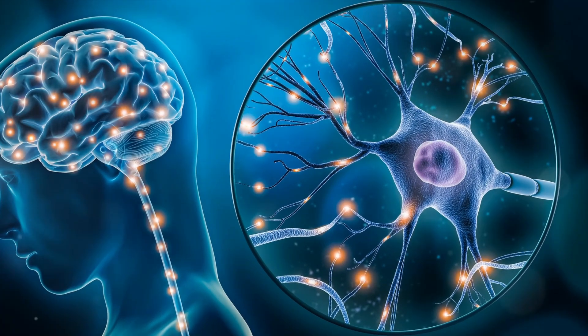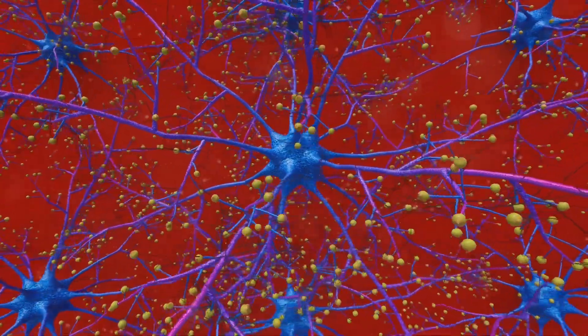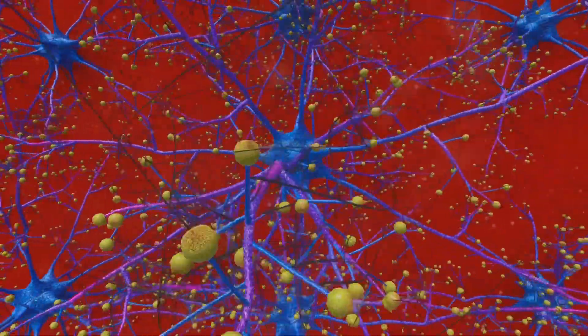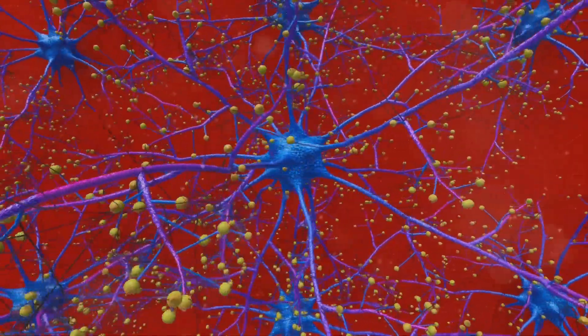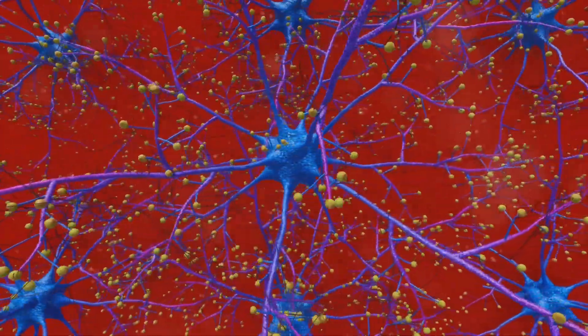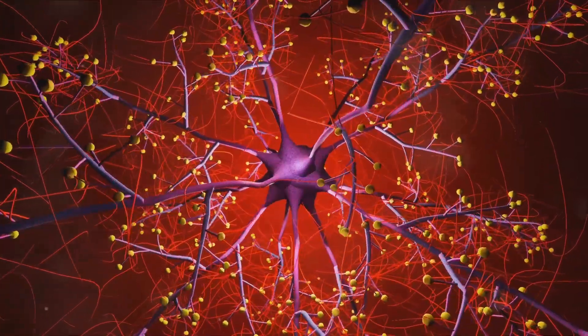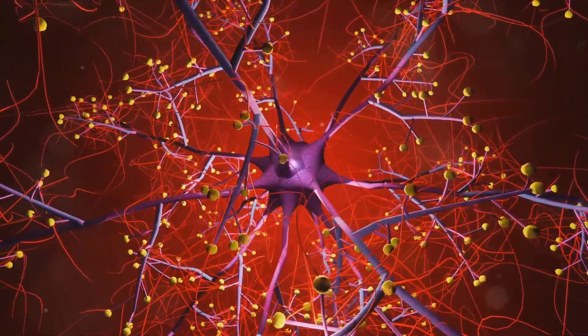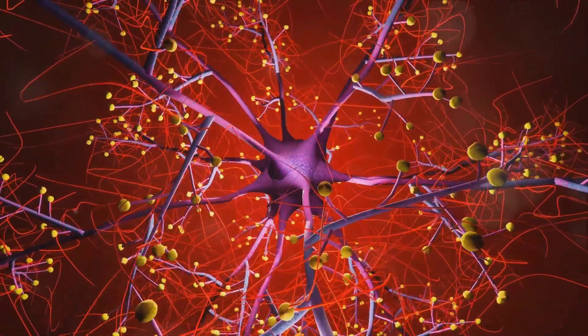But what does this mean for us? Well, this research is not just about making pretty maps. It's about unlocking the secrets of the brain and, by extension, ourselves. It's about understanding how each cell contributes to the symphony that is human cognition and behavior. And most importantly, it's about paving the way for the treatment, prevention, and cure of brain disorders.